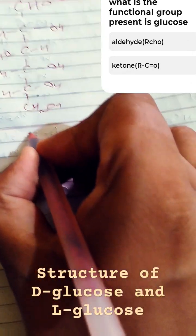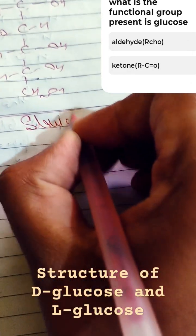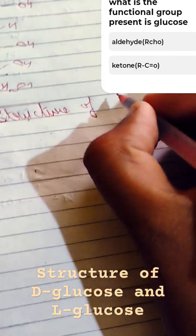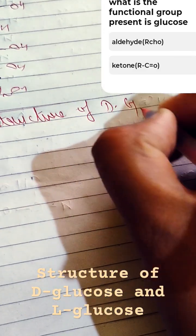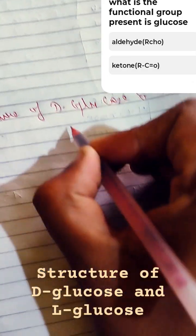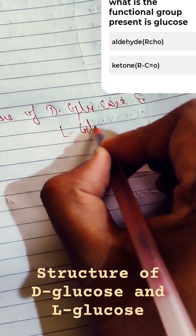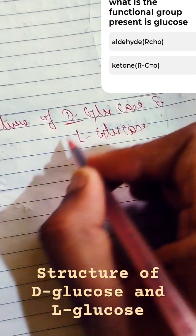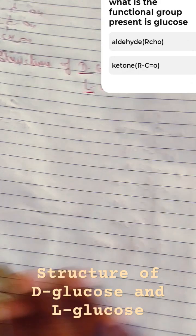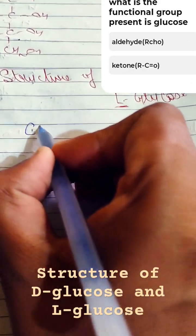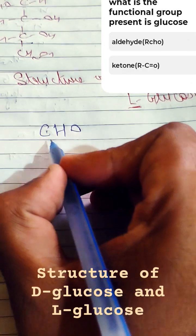We're going to draw the structure of D-glucose and L-glucose. D is for dextrorotatory and L for levorotatory. So let's draw it. Glucose we are making, so functional group will be aldehyde.